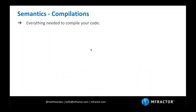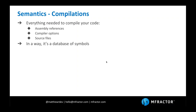A compilation is everything you need to compile your source code: all the assemblies referenced by your project, the compiler options and flags, and all the symbol information derived from your source code files. You can think of a compilation as a big database of symbols. Much like the reflection API, we can use the compilation to ask questions about the symbol information in our source code.